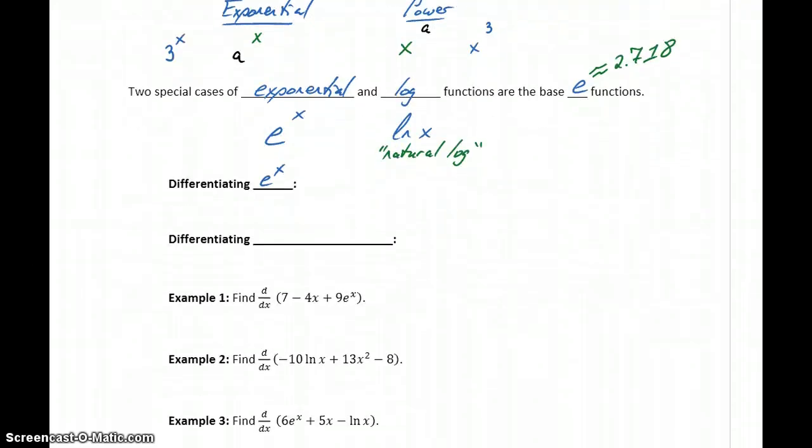Differentiating e to the x, we get the derivative of e to the x is equal to just e to the x, so that function remains completely unchanged, times the derivative of that variable portion, so the derivative of x is just 1, so this becomes e to the x power. So derivatives of exponentials, or a derivative of e to the x is quite simple, that function just remains completely unchanged.